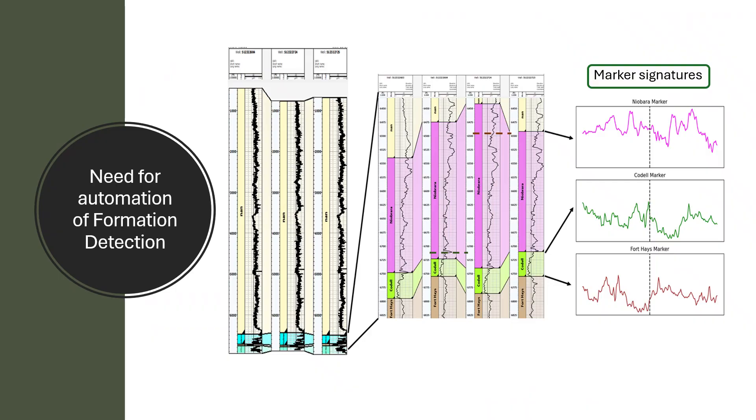A marker top refers to the beginning of intersection between the well and the formation. Experts note a recurring pattern at this depth called the marker signature, which tends to be consistent across nearby wells.